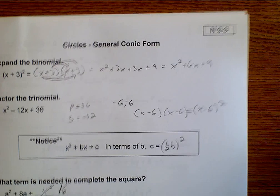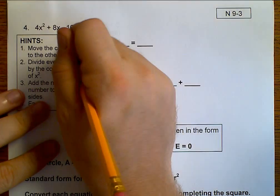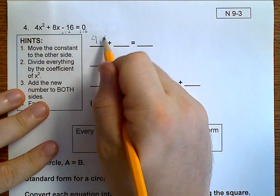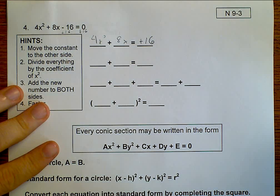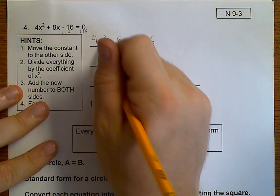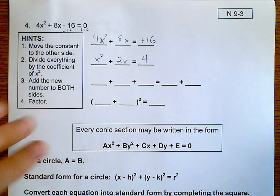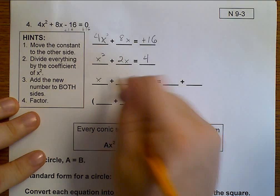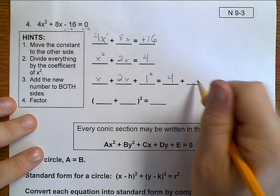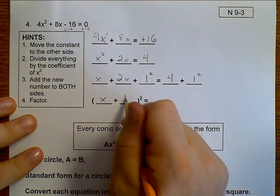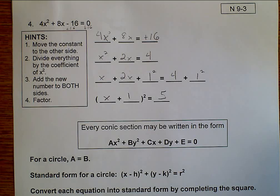Let's do this again. First thing: move the constant to the other side, so I'm going to add 16 to both sides. That gives me 4x squared plus 8x equals positive 16. Because this x squared has a coefficient, I want to divide everything by that coefficient, and I get x squared plus 2x equals 4. Now we figure out our completing-the-square number — half of 2 is 1, so this would be 1 squared. And so x plus 1 squared equals 4 plus 1, which is 5. That's how we complete the square.